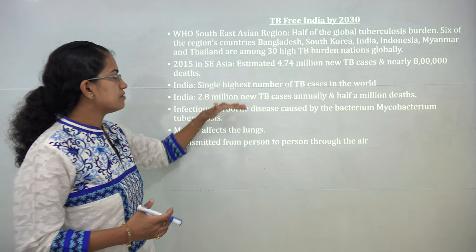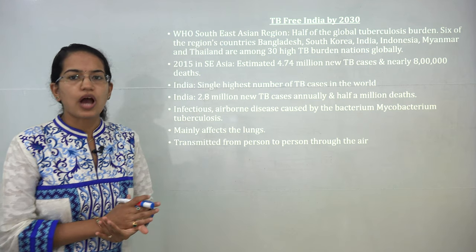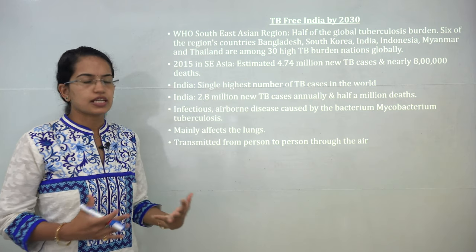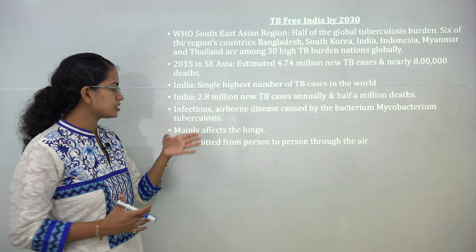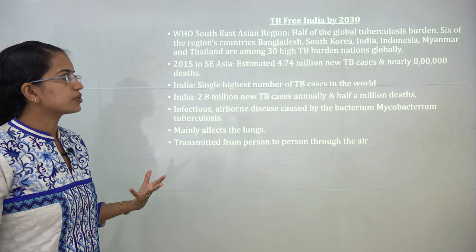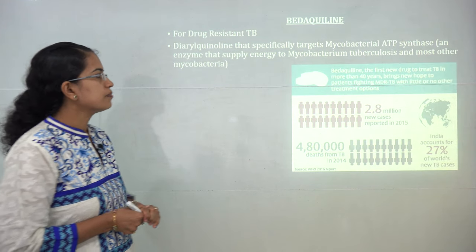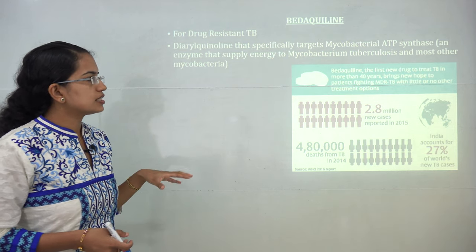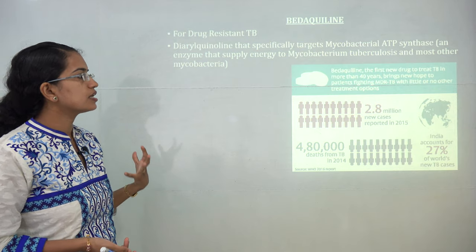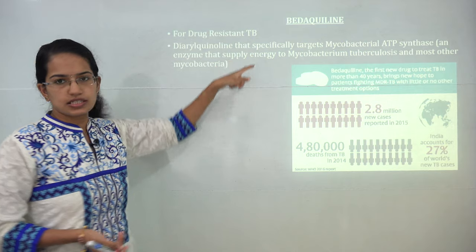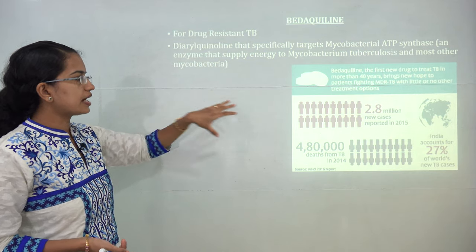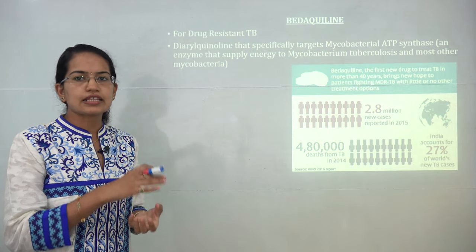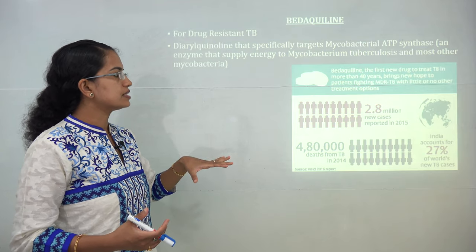India itself has the highest single-country number of TB cases worldwide, with nearly 2.8 million new cases detected annually. It is mainly infectious and airborne, spread through Mycobacterium tuberculosis, which affects the lungs. India is planning to declare the nation TB-free by 2030. A new medicine for drug-resistant TB has been recently released, known as bedaquiline — the first drug released in more than 40 years for drug-resistant TB. Its specific target is mycobacterial ATP synthase, the enzyme that supplies energy to Mycobacterium tuberculosis, thereby inhibiting further bacterial growth.